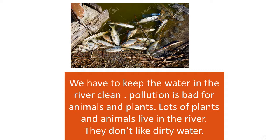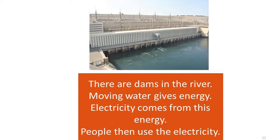So if we throw trash in the river, fish will die. There are dams in the river. Moving water gives energy. Electricity comes from this energy. People then use the electricity. We use the electricity to turn on the lamps. We use the electricity to turn on machines like washing machines and fridges.